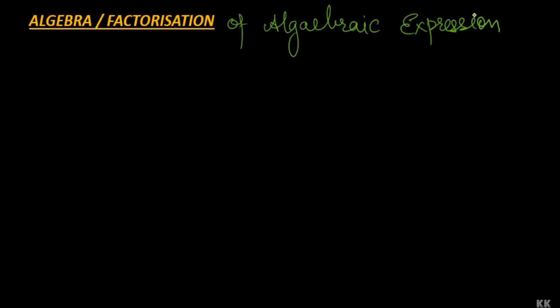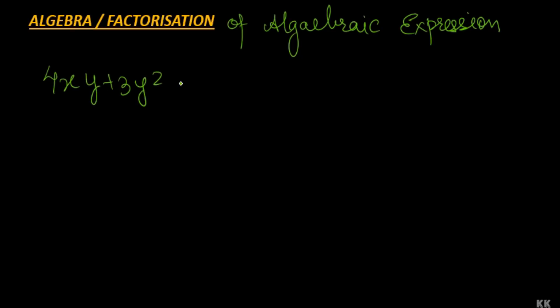For example, if we have an algebraic expression say 4xy plus 3y square, in this particular expression if we have to factorize it, it means that we have to write this expression in the form of the product of the factors — factor 1, factor 2, and so on.